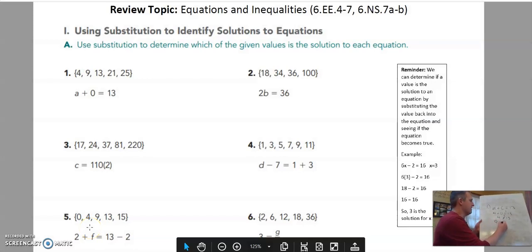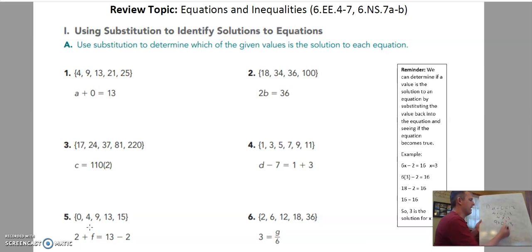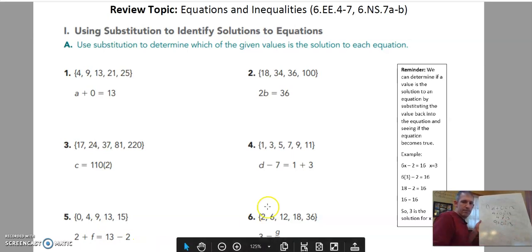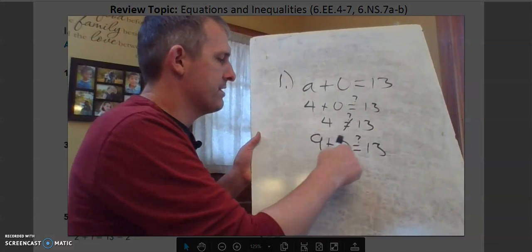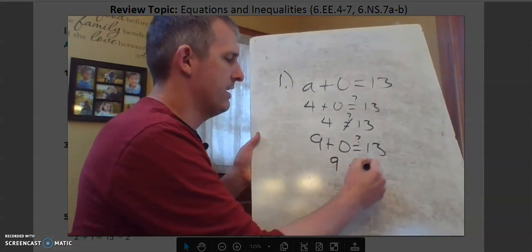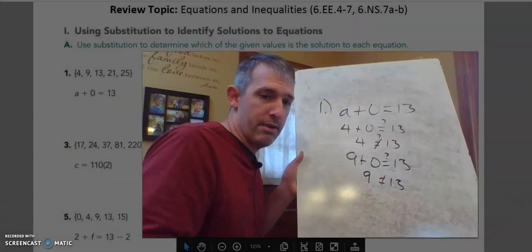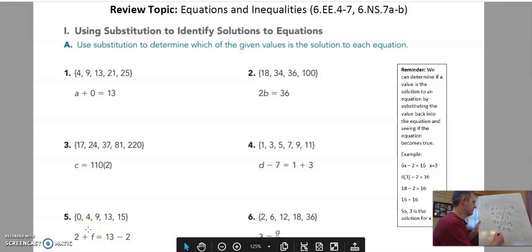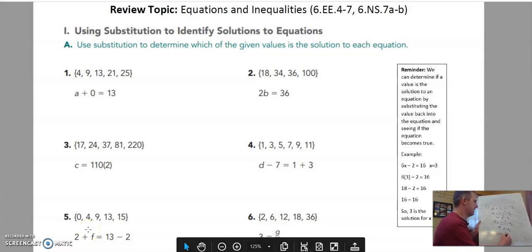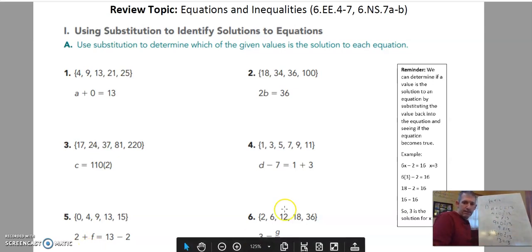If I do 4 plus 0, I get 4, and 4 does not equal 13. So I could put a line through that and say that is not true. Next number: 9. If I put 9 in for a, will that be a true statement? Well, 9 plus 0 is 9. 9 does not equal 13. So that's not a solution. Let's try the next one. 13. 13 plus 0, does that equal 13? And 13 plus 0 is definitely 13. So yes, this one works. So 13 would be my solution.